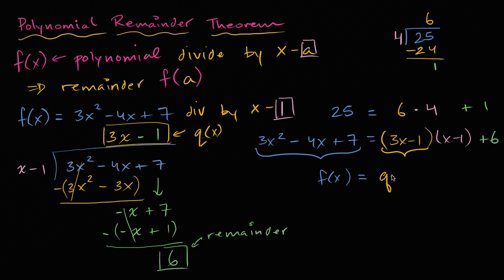So f of x is going to be equal to the quotient q of x times, this is our x minus a. In this case a is 1, but I'm just trying to generalize it a little bit. So x minus a, and then plus the remainder. And we know that the remainder is going to be a constant because the remainder is going to have a lower degree than x minus a, and x minus a is first degree. So in order to have a lower degree, this has to be zero degree. This has to be a constant.